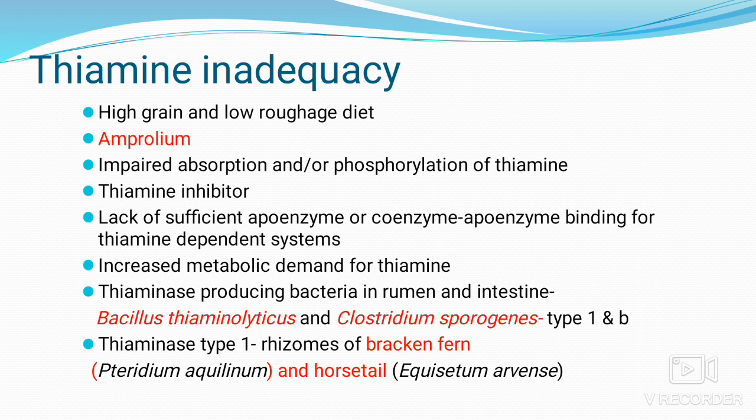Thiamine inadequacy occurs due to several causes. First, a high grain or low roughage diet enhances proliferation of thiaminase-producing bacteria, which destroy thiamine and cause deficiency. Second, the anticoccidial drug amprolium is a thiamine antimetabolite. Third, impaired absorption or phosphorylation of thiamine, thiamine inhibitors in host tissues, lack of sufficient apoenzyme binding for thiamine-dependent systems, and increased metabolic demand without increased supply. The common thiaminase-producing bacteria in the rumen and intestine are Bacillus thiaminolyticus and Clostridium sporogenes, producing Type 1 and Type B thiaminases. Thiaminase Type 1 is also present in the rhizomes of bracken fern; bracken fern fed in excess also causes enzootic hematuria.